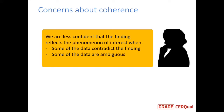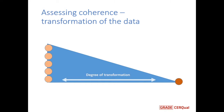In relation to coherence, we're less confident that a finding reflects the phenomenon of interest when some of the data contradict the finding or some of the data are ambiguous. This slide shows a visual representation of what may happen to data in a qualitative synthesis. On the left-hand side are data from individual studies, and in the process of creating a review finding, there will be some degree of transformation of the material. In some instances, that transformation may just be creating a summary — what we would call a descriptive finding. But in other instances, the data may be used to develop an element of a theory or a new hypothesis — that would be the more transformed or interpretive finding.